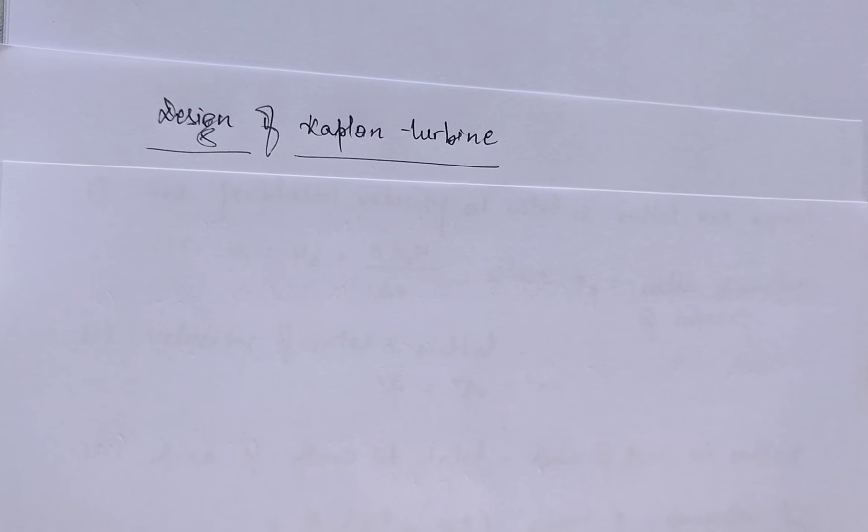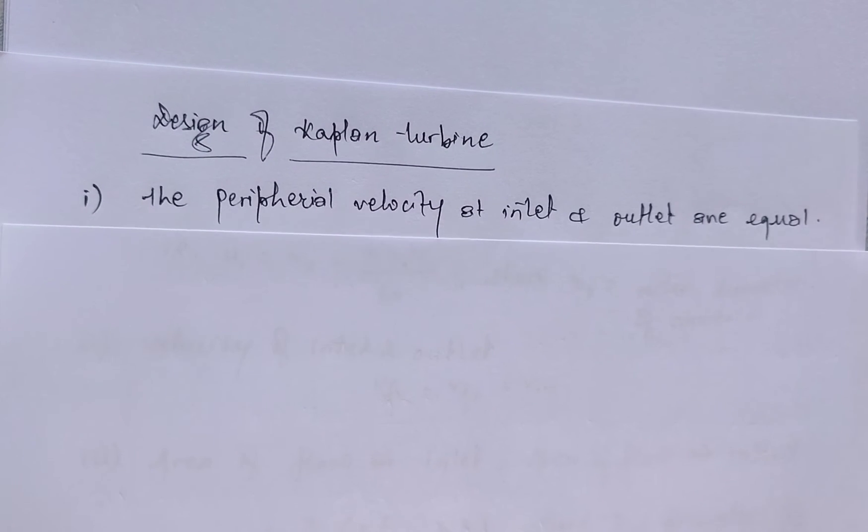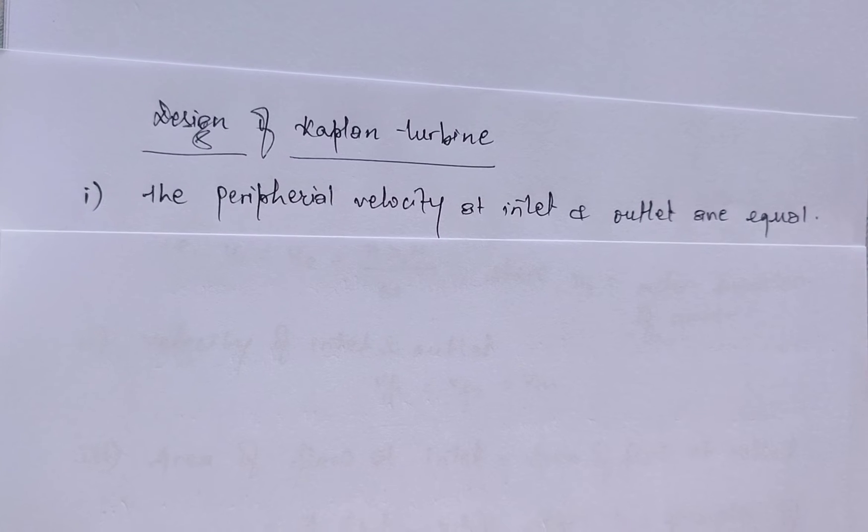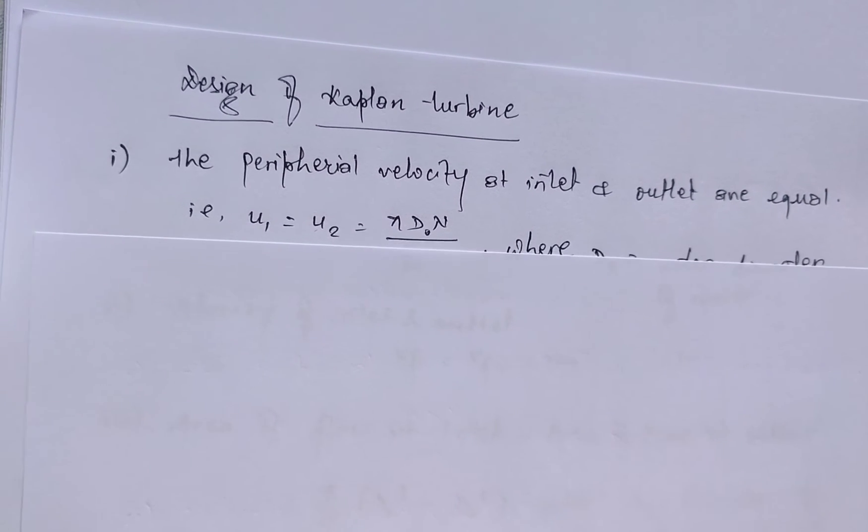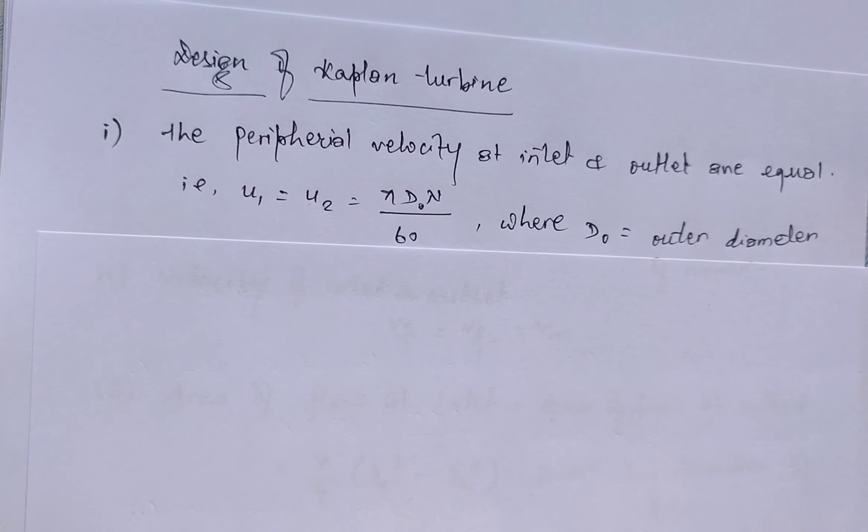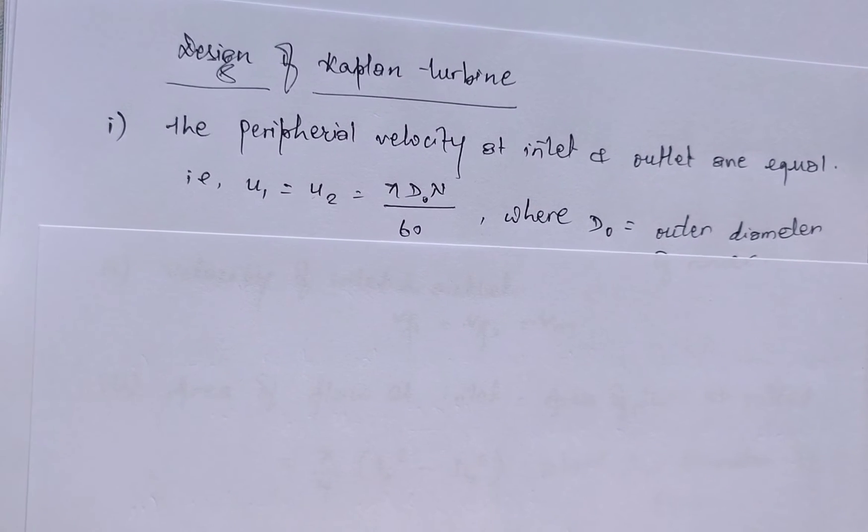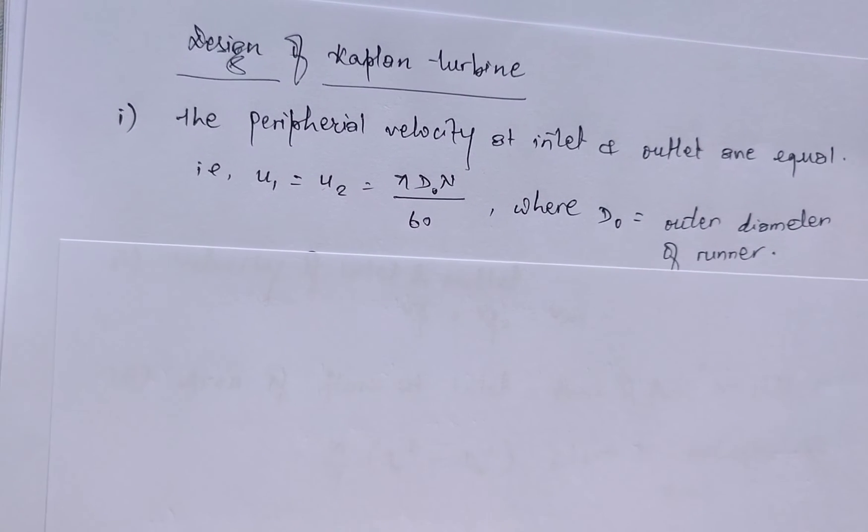Now let's talk about the design procedure of Kaplan turbine. The design steps of the Kaplan turbines are: the peripheral velocity at inlet and outlet are equal, that is u₁ = u₂ = πD₀N/60, where D₀ is the outer diameter of the runner.